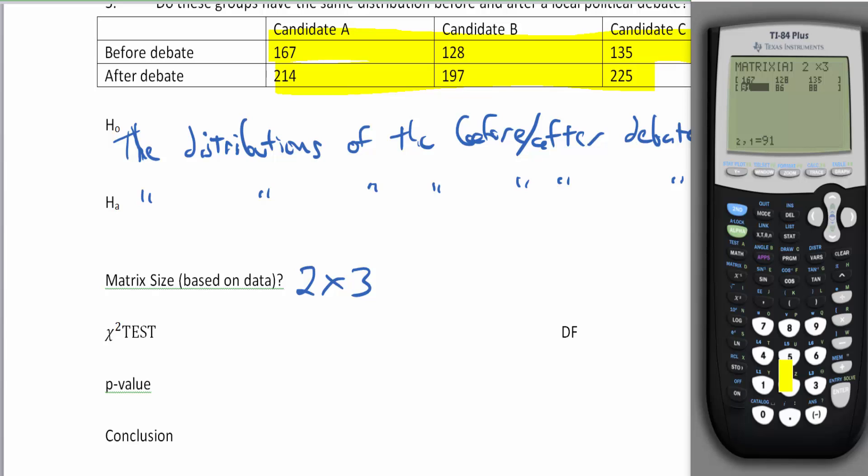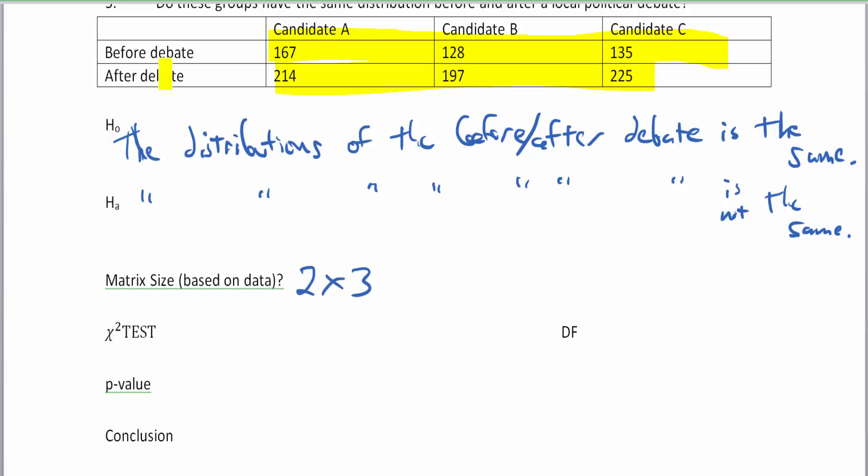Now I can see everything here on the screen: 214, 197, and 225. I'm going to double, triple, quadruple check that all six of those numbers are correct. Now we're going to click on stat, move over to the test menu, scroll up from the bottom to get to the chi-squared test. I just typed my observed values into A, expected values will be computed in B. Click on calculate. Here we have our very small chi-squared test number with a very large p-value. This is not a rare event, and we have two degrees of freedom.